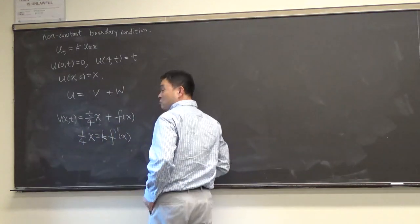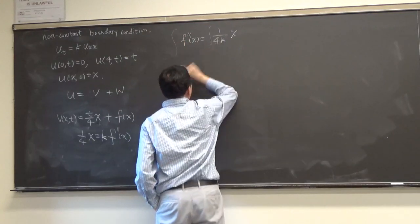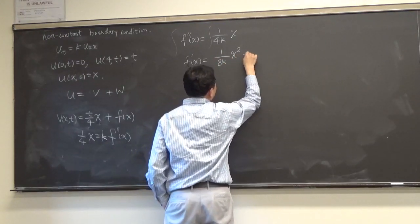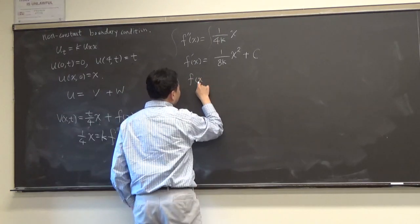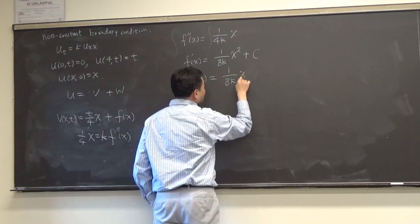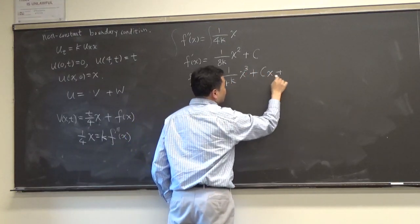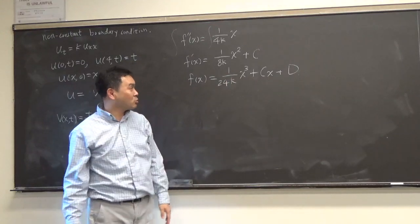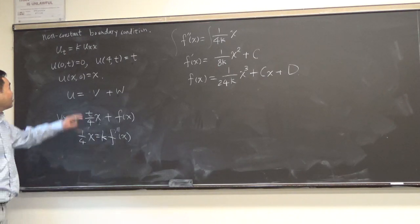Now let's just figure out what f of x is because that means f double prime of x is one over 4k times x. So we integrate both sides. That gives you f prime of x equals to one over 8k x squared plus some constant, right? And we integrate that yet again. You get f of x equals to one over 24k x cubed plus cx plus d, right? Because if you integrate x squared, that's one-third x cubed, so three times eight is 24. So one over 24k x cubed plus cx plus d.